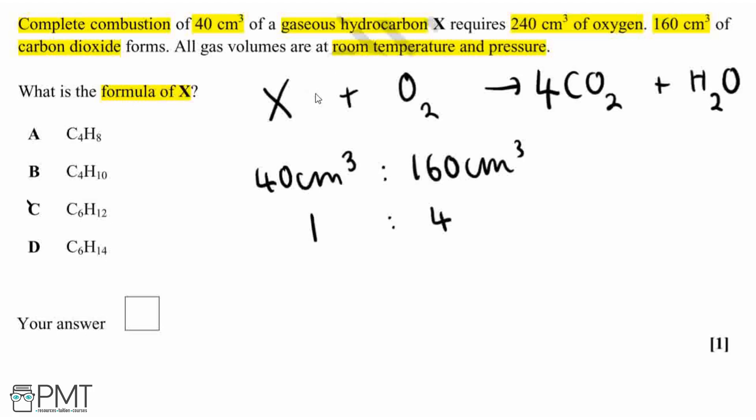Therefore, we can eliminate options C and D, and our answer will have to be either A or B. So let's have a look at some more ratios to figure out the rest of the formula.